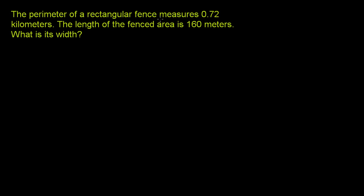The perimeter of a rectangular fence measures 0.72 kilometers. The length of the fenced area is 160 meters. What is its width?